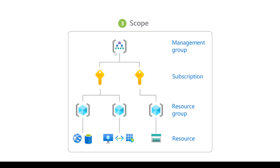RBAC can be divided into four categories. We can implement role-based access control at the resource level, the resource group level, or further at the subscription or management group level. Whatever resources come under a particular hierarchy, the user will have all the accesses.